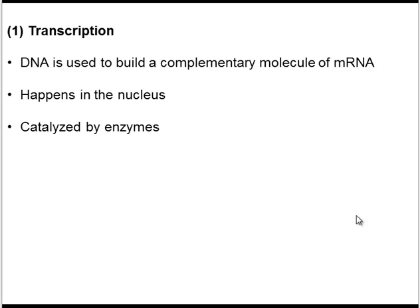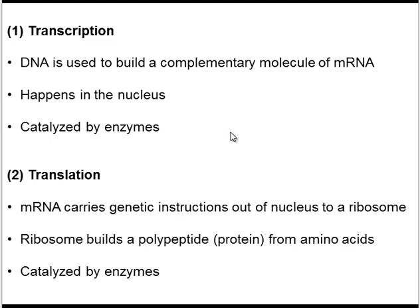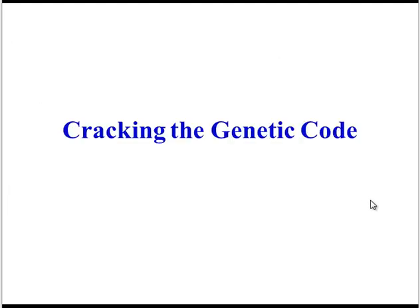To sum up those two steps: transcription is using DNA to make mRNA within the nucleus, and you need enzymes to do this. Translation is when mRNA goes to the ribosome and the ribosome builds a protein using the instructions in mRNA — also catalyzed by enzymes. Now, how does a strand of mRNA actually instruct the ribosome to build a protein? In order to answer that, we need to crack the genetic code.